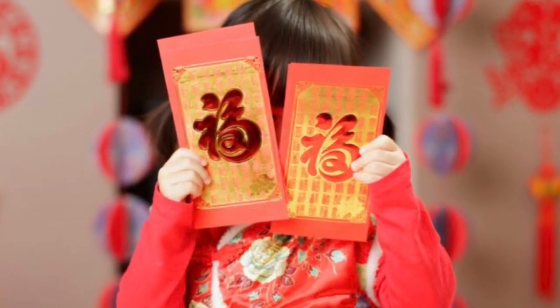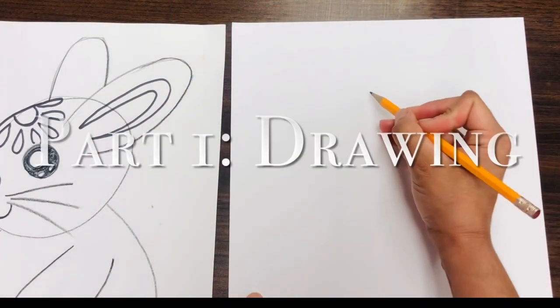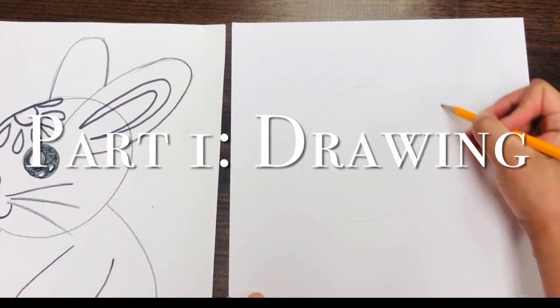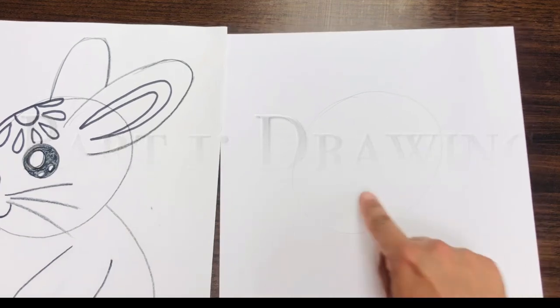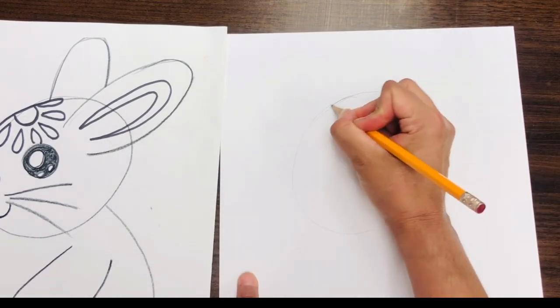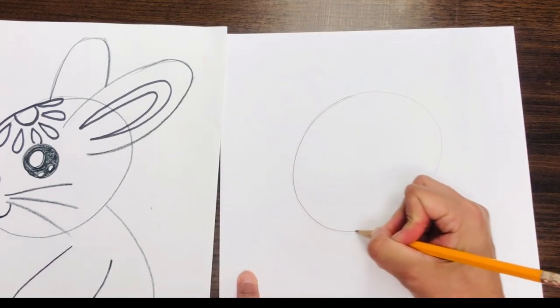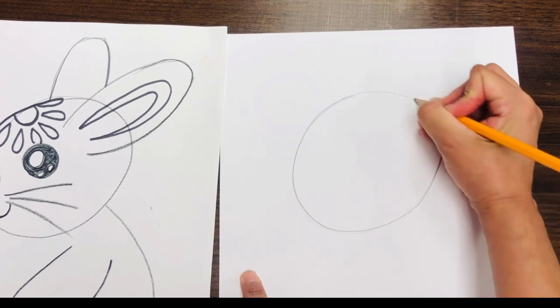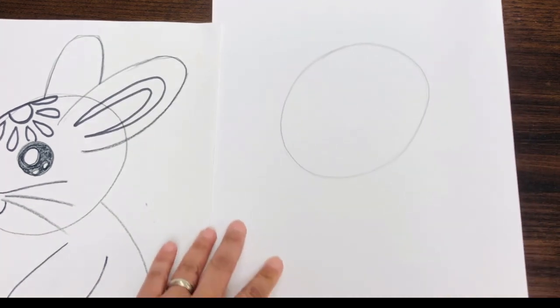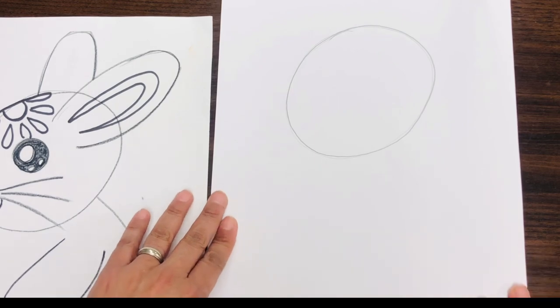For the head, you're going to go ahead and draw an oval. It does not have to be perfect. Let me make that a little bit darker so you can see on our video. There we go. Then scoot your paper up a little bit.